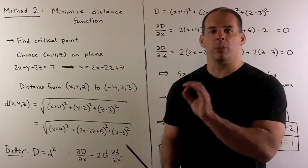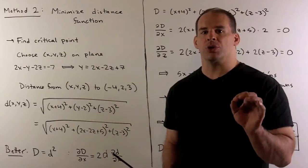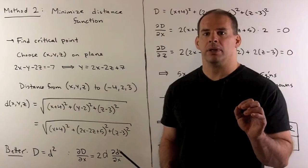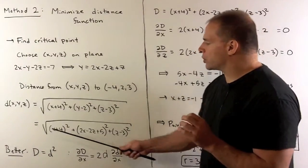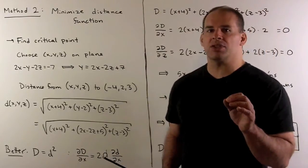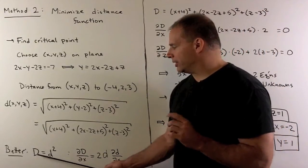So if I want to find critical points, we take the partials with respect to x and z, set them equal to zero, and solve. Now, we don't want to work with square roots. So a useful trick is to replace distance with distance squared. We'll call that capital D.